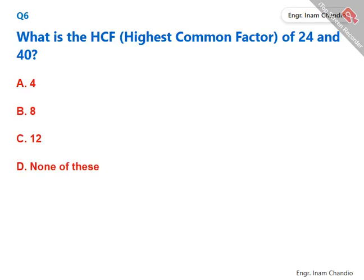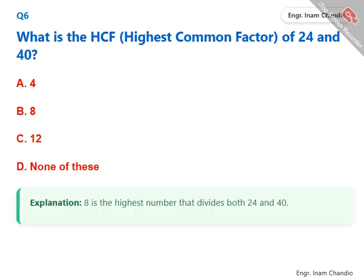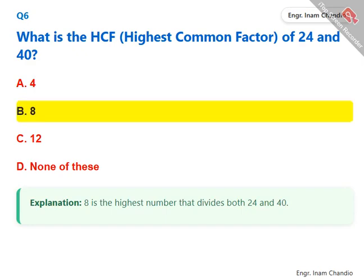What is the HCF, highest common factor, of 24 and 40? 8 is the highest number that divides both 24 and 40. The correct answer is B. 8.